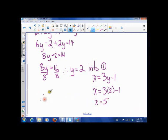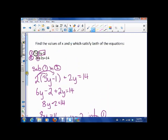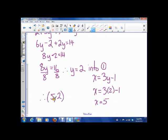So therefore the values are 5 and 2. That's the coordinate. And remember what this means is if I were to graph these two lines, this would be the point of intersection. So let's go to another example.